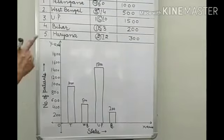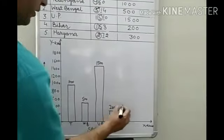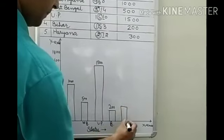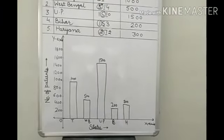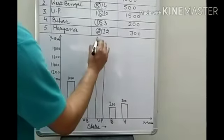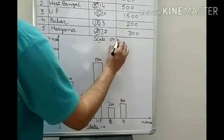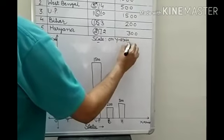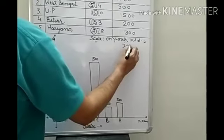The last is for Haryana. Corresponding to Haryana, there are 300. 300 between 200 and 400. This bar represents Haryana. And now you have to show the scale. Okay. So on Y axis, write on Y axis, here 10 small division is equal to 200 patient.